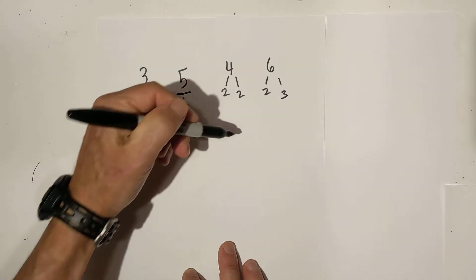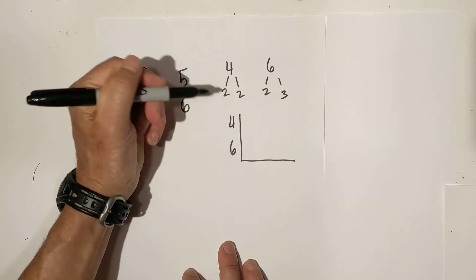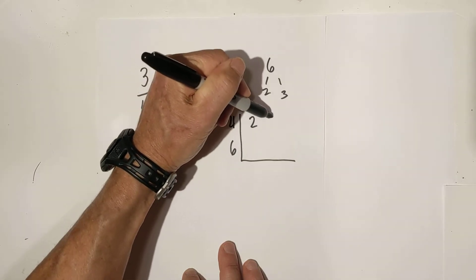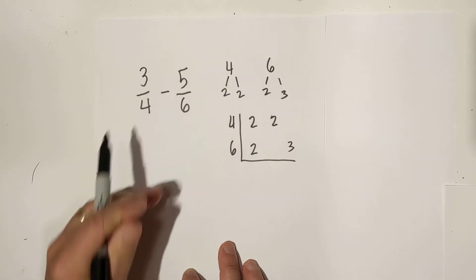and then six is two times three. Next, if you use this chart, it just keeps everything organized. So I'm going to write the prime numbers for each of these. I'm going to write two and two, and I'm going to write two, and I'm not going to write the three here. I'm going to skip it,